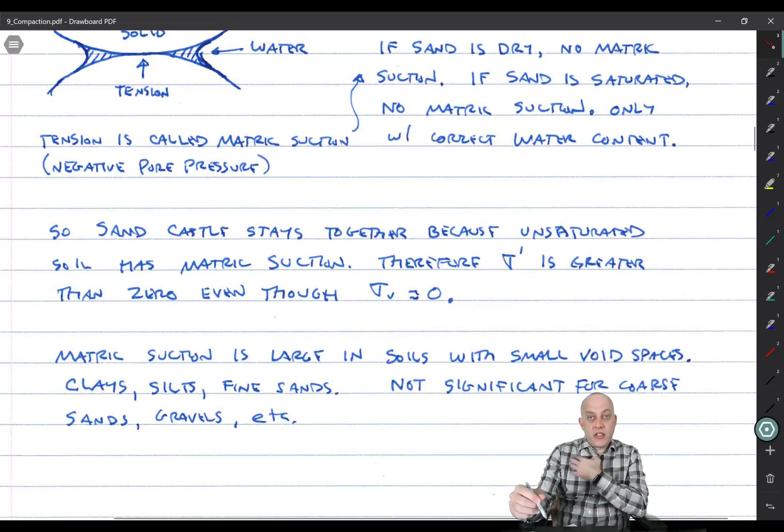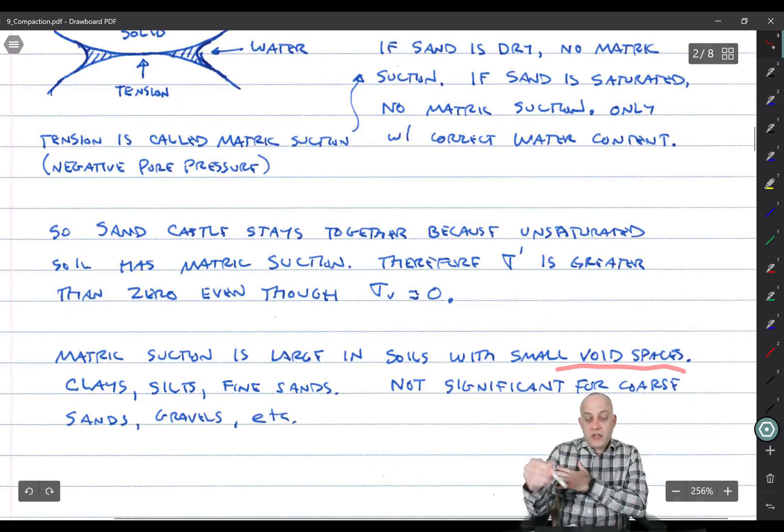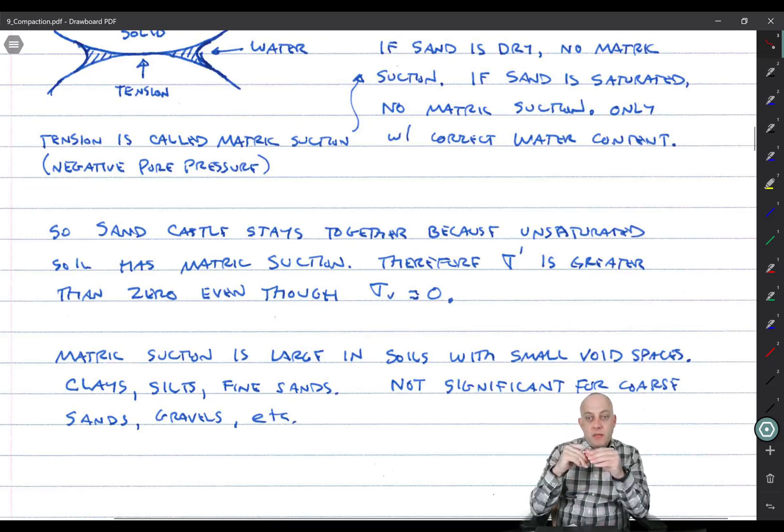Alright, now matrix suction is large in soils with small void spaces. If you have, say, a clay, the void space in that clay is really tiny because the clay minerals are tiny. You can get really huge matrix suction if that clay is unsaturated. You can get air and water mixed together. On the other hand, if you have coarse sand or gravel, the void space is really big. The meniscus, the curvature is not that big and the forces induced by the negative pore pressure are not that big compared to the weight of those particles.